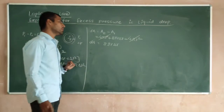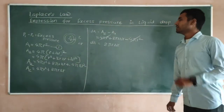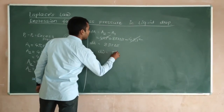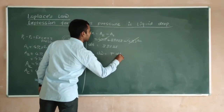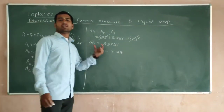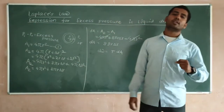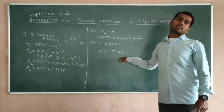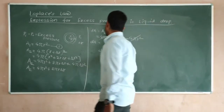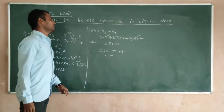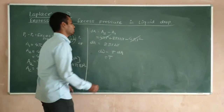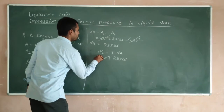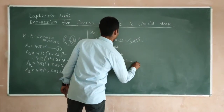Now we know the relation between surface energy and surface tension: dW = T·dA. We substitute the value of dA, which is 8πr·δr. So dW = T × 8πr·δr. This is equation number 3.